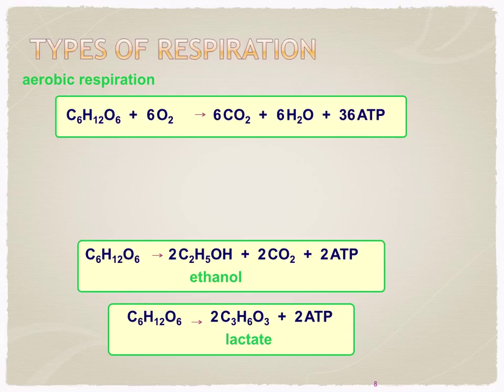There are two types of respiration: aerobic respiration and anaerobic respiration. The key difference is that aerobic respiration uses oxygen, whereas anaerobic respiration doesn't use oxygen. Also notice how many ATP molecules are produced — aerobic respiration yields 36, while anaerobic respiration yields only 2.